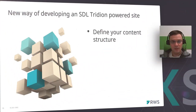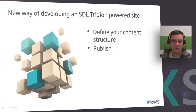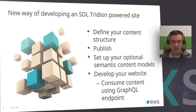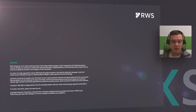Thank you, Aleksija, for such a great presentation. Summarizing: as a first step to develop a website, you need to define your content structure using the new schema settings. You can publish your content as soon as you are done — there is no need for a templating step anymore. The next step is defining your semantic content models, which is an optional step. You can use the data model as generated by Content Manager and published to Dynamic Experience Delivery. What you need is to consume content using the public content API GraphQL endpoint. Thank you for your time — we'll be available to answer your questions. Hope you enjoyed our session as well as the event itself.